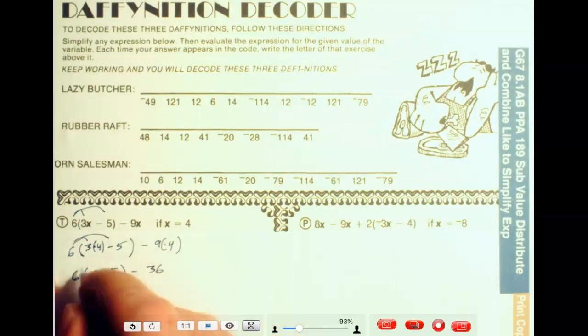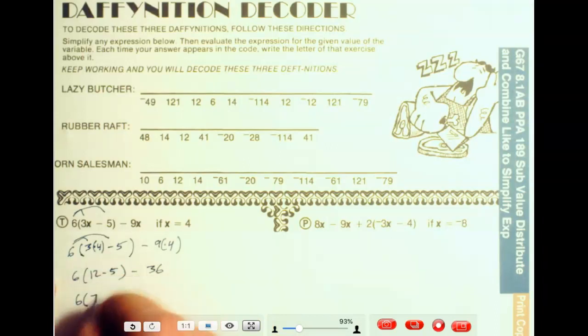Just to get to this point here, I'm going to go ahead and do 6 times, 12 minus 5 is 7, minus 36. Or I could continue on, 6 times 7 is 42, minus 36, and that's going to be 6.